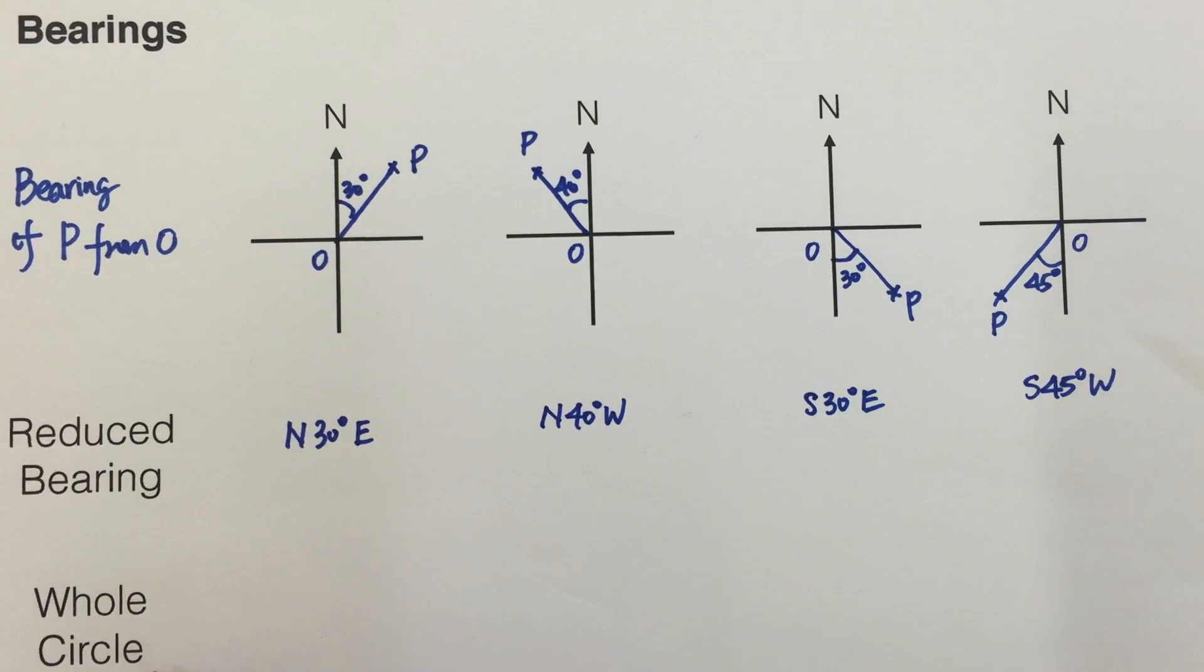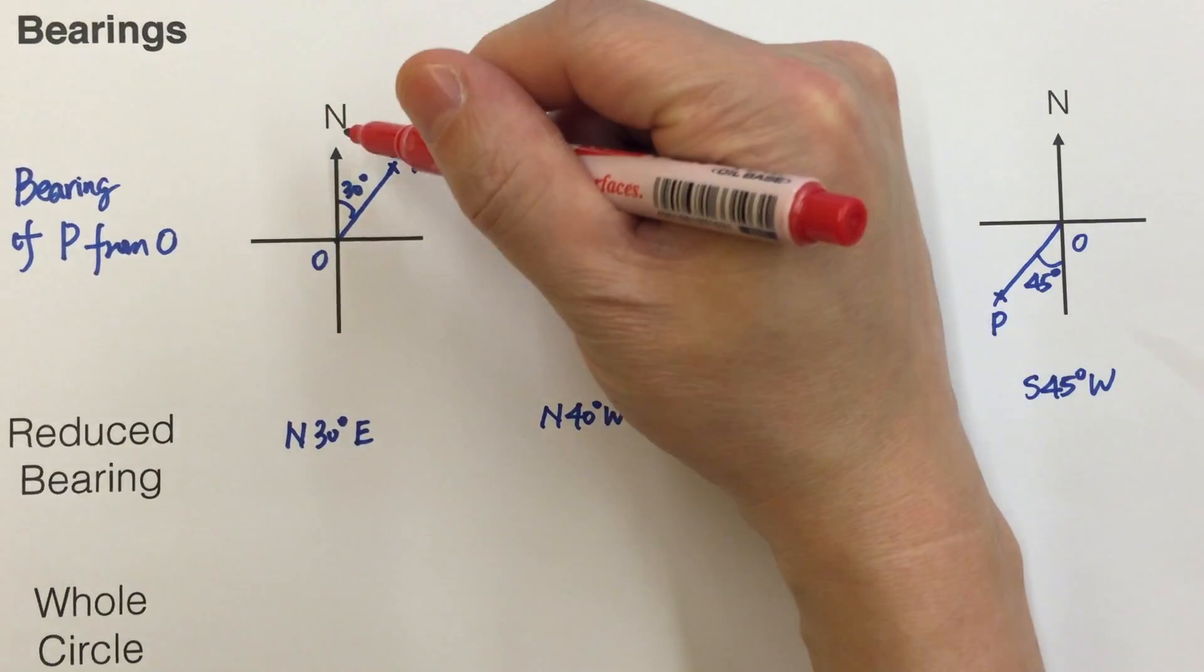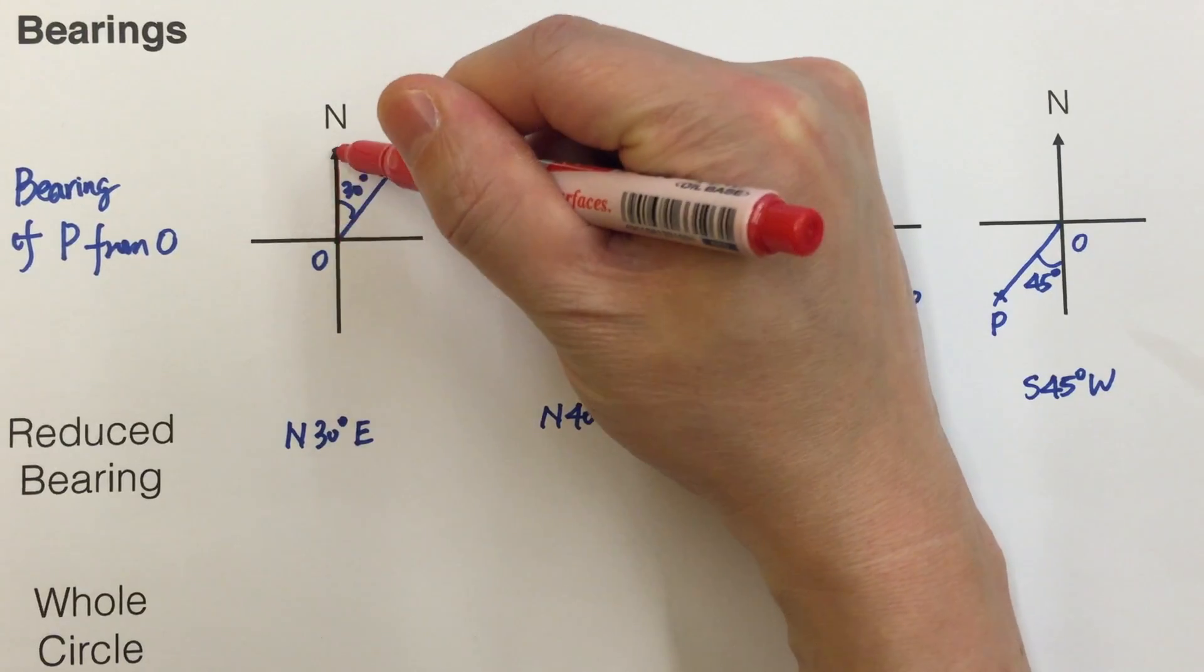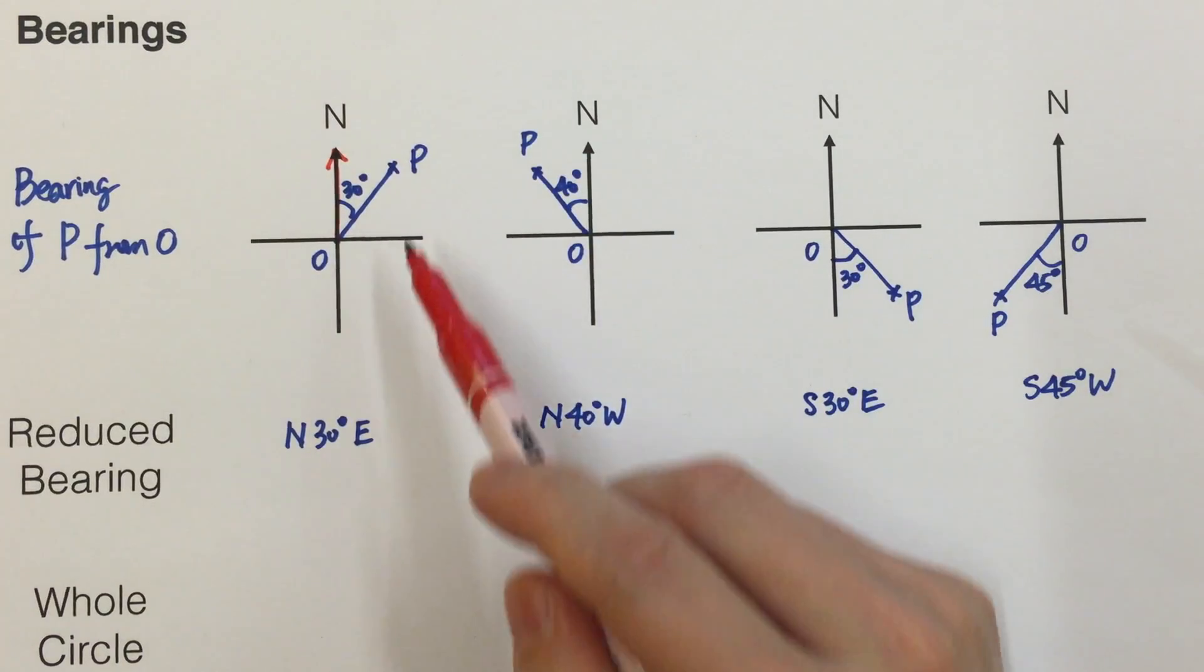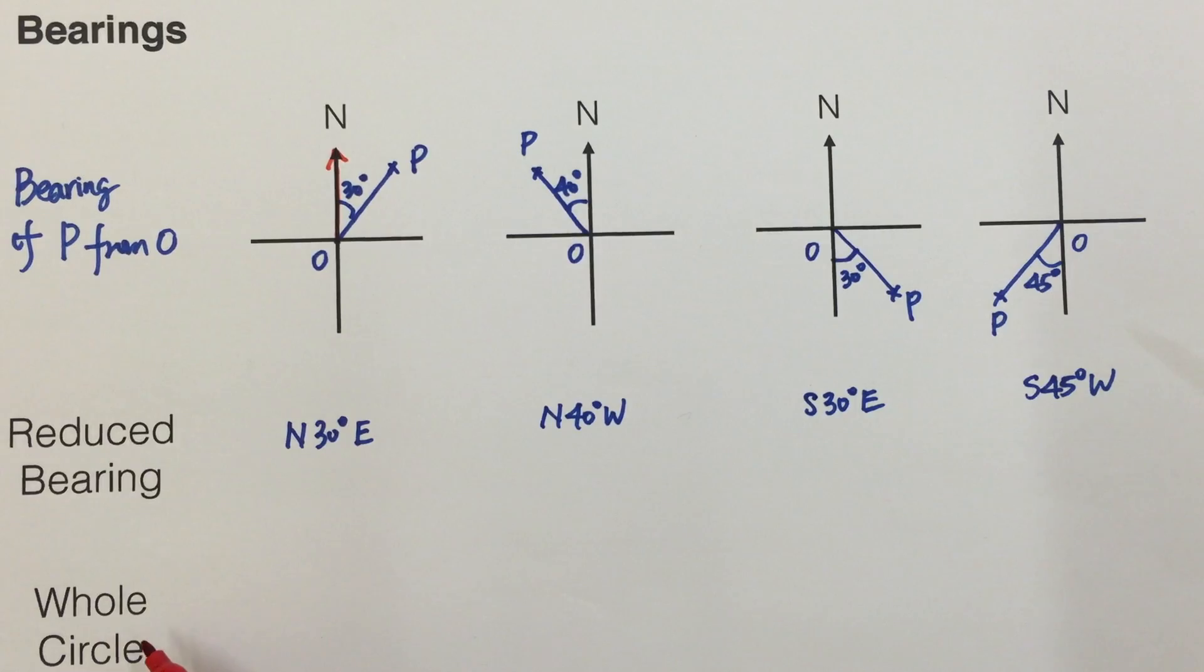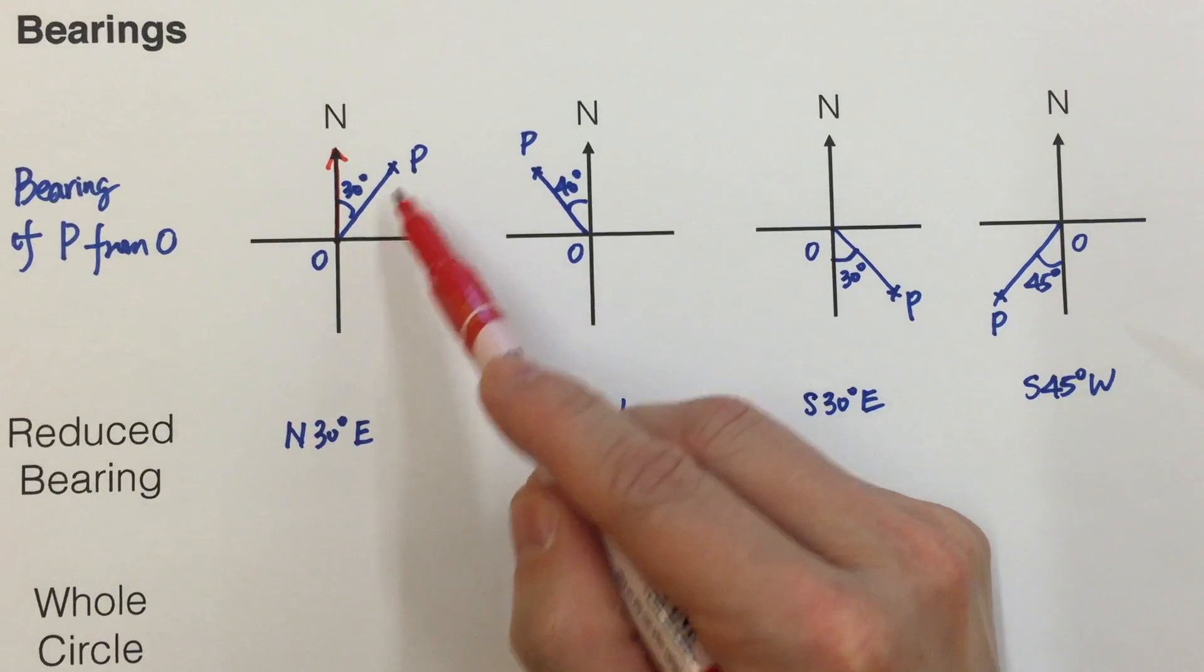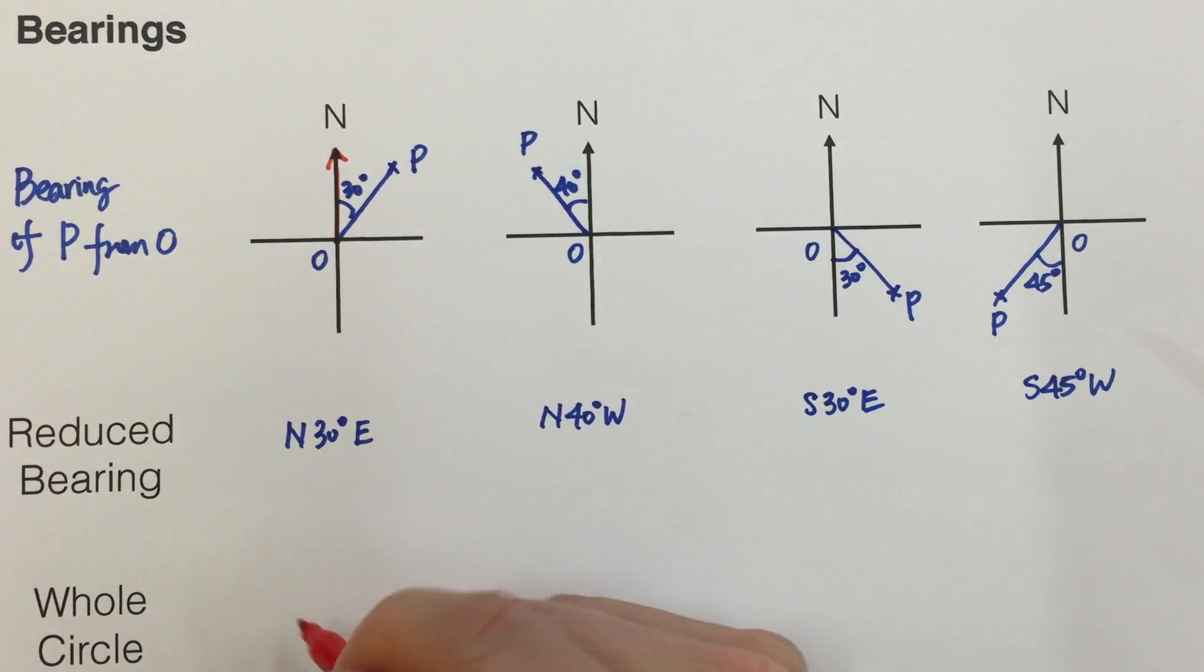Next we come to the whole circle bearing. We always start from the true north direction. So if P is here, the whole circle bearing of P from O will be 30 degrees.